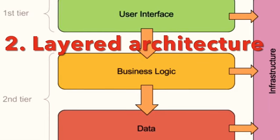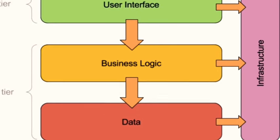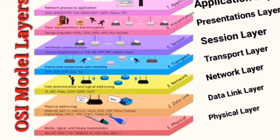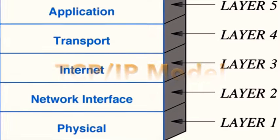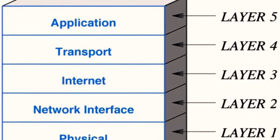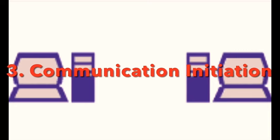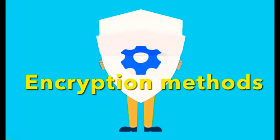Number two: layered architecture. Protocols are often organized into layers following the OSI, or Open Systems Interconnection, model or the TCP/IP model. Each layer has a specific responsibility and protocols within each layer handle different aspects of communication. Number three: communication initiation. When two devices or systems want to communicate, they must agree on a common protocol. This involves negotiating parameters such as data format, encryption methods, and other settings.